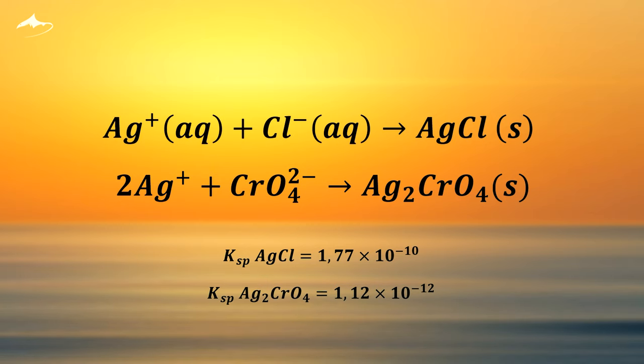The chloride in the sample, or analyte, is precipitated by the addition of silver ions forming silver chloride, which appears as a white precipitate. As soon as all the chloride is consumed, the silver reacts with the chromate forming a brick red precipitate, indicating the endpoint of the titration.